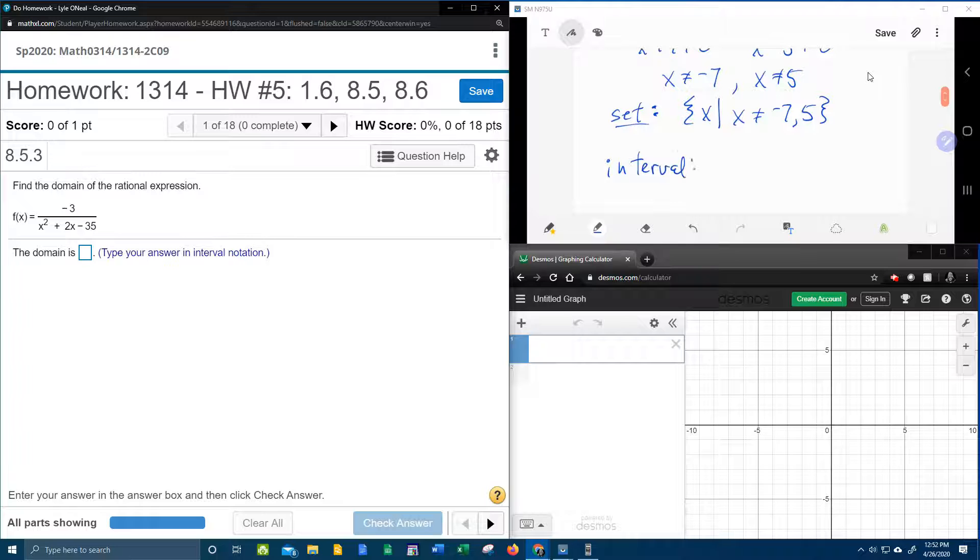So in order to write this in interval notation, remember we know that x can be anything except negative 7 and 5.